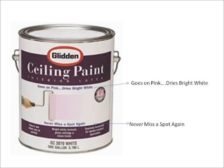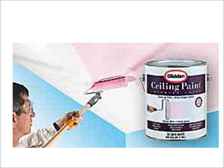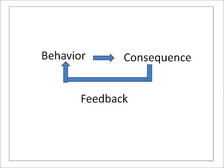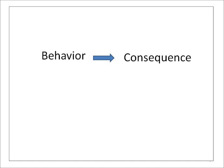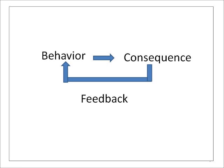You paint a white ceiling with white paint. Then when the paint dries, you notice you missed spots. This won't happen with this paint, which goes on pink and dries white. The feedback telling you where you painted is instantaneous. This example illustrates the model for operant conditioning — in everyday conversation, we call this trial and error learning. We perform a behavior and see the consequences, then adjust our behavior accordingly.